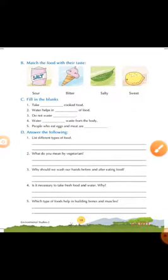The fifth one is, people who eat eggs and meat are non-vegetarian. People who eat eggs and meat are non-vegetarian.